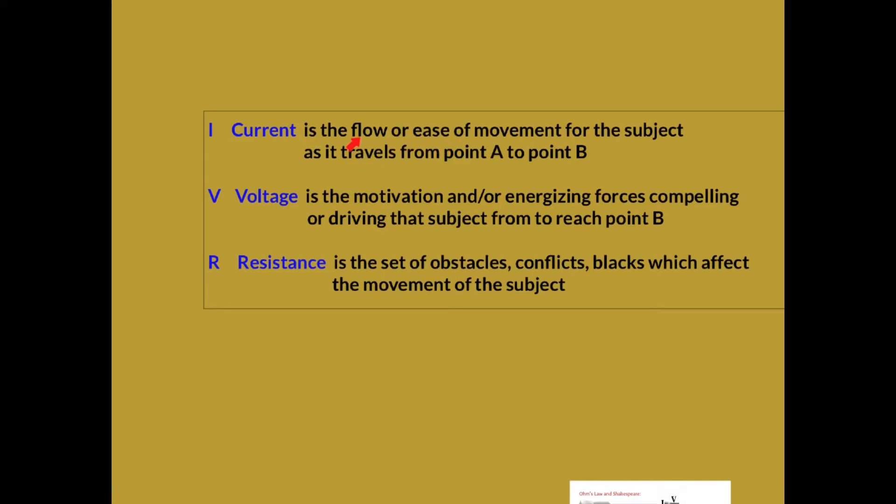The ease of that flow, the ease of that movement, we can connect to our other two terms. If we think of that subject, the individual, the main character in our story, the sub character, whoever we're looking at, as they move from a point in their story to reach a goal—that goal may be stated, it may be a dream, it may be a wish, it may be something that other outside people are influencing. They have some sort of desire, motivation, energizing forces, even if those aren't internal. Our voltage is the thing that is sparking us, that is motivating us, or motivating this character—the forces that are compelling or driving the subject to go from point A to point B.